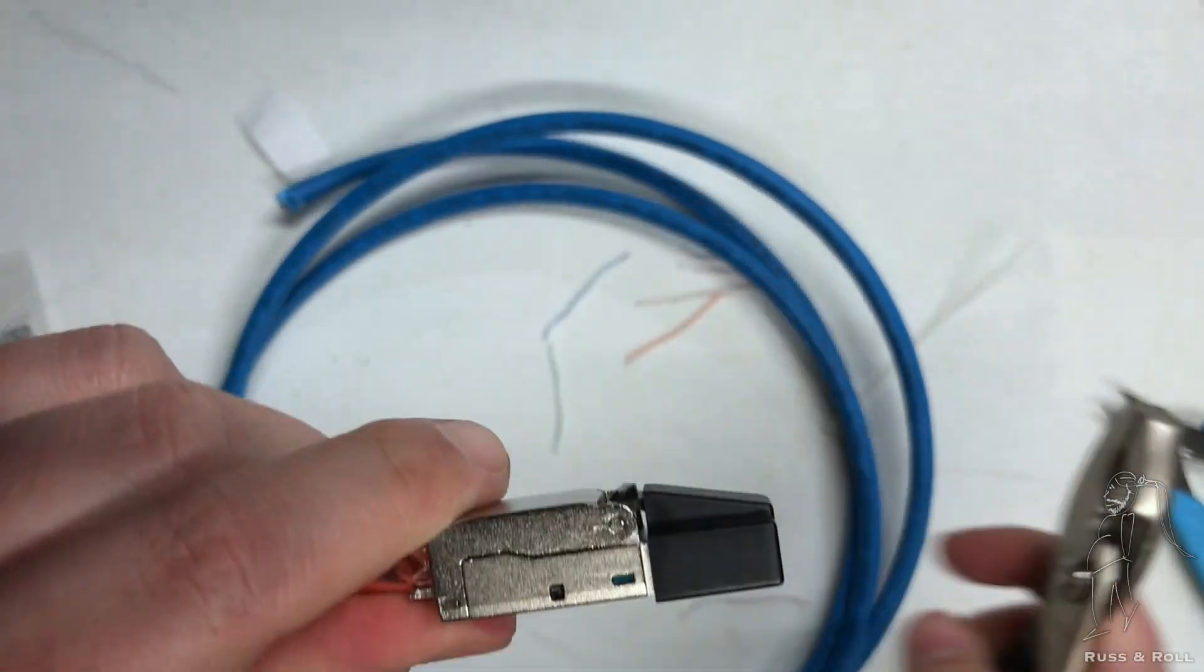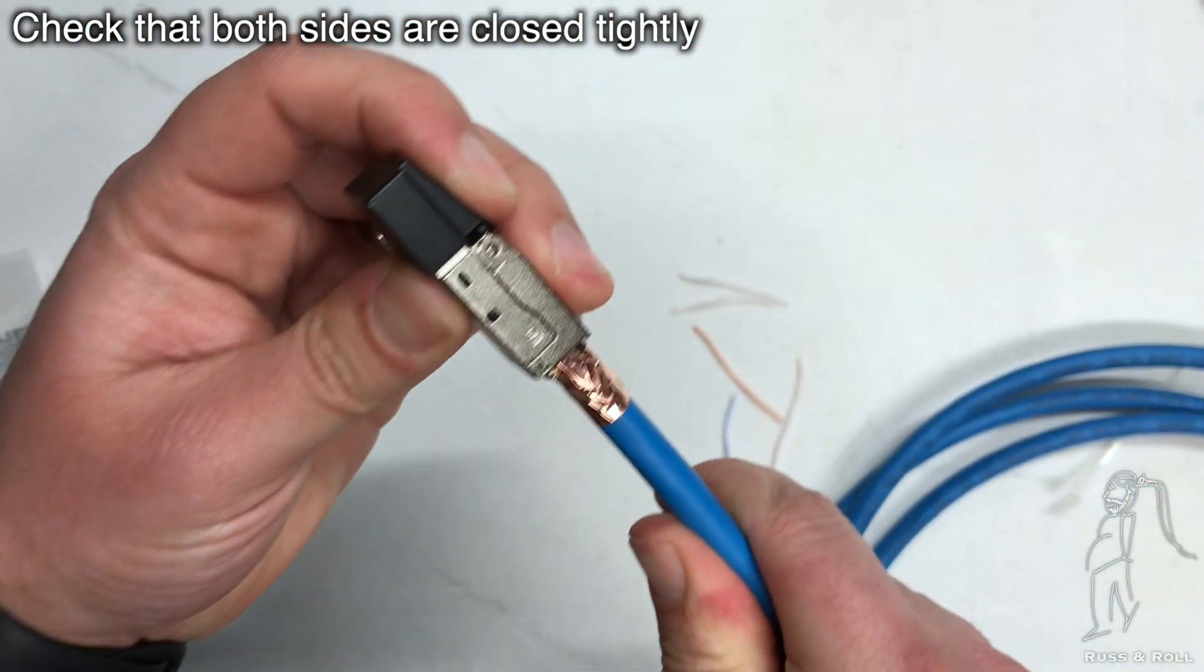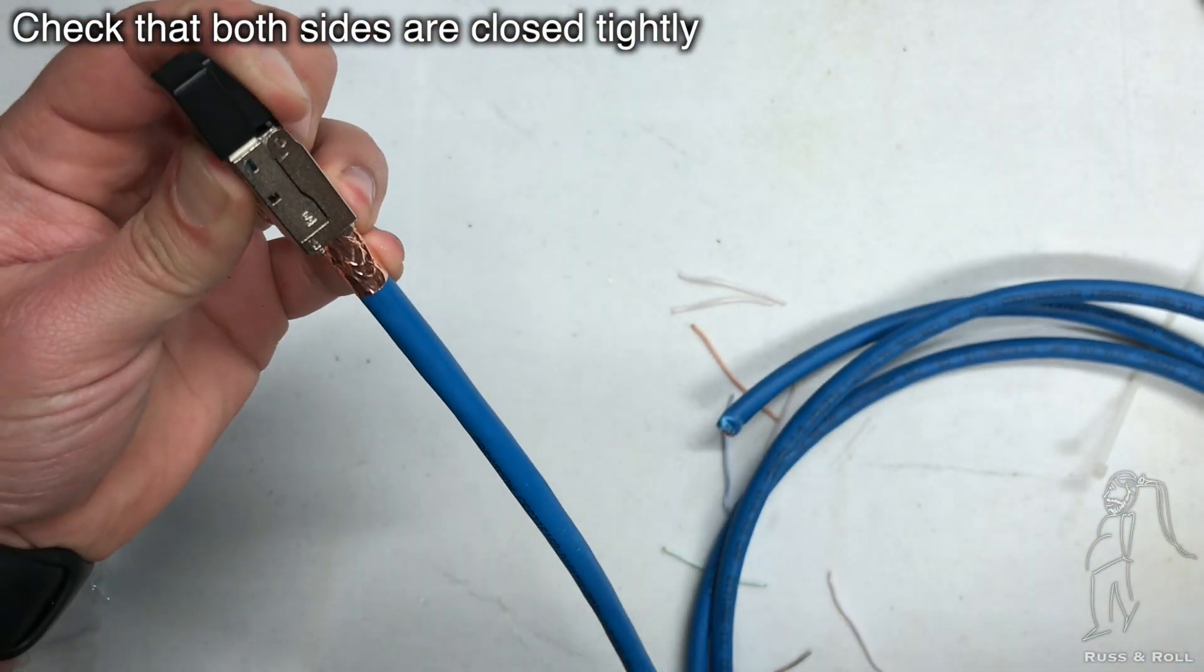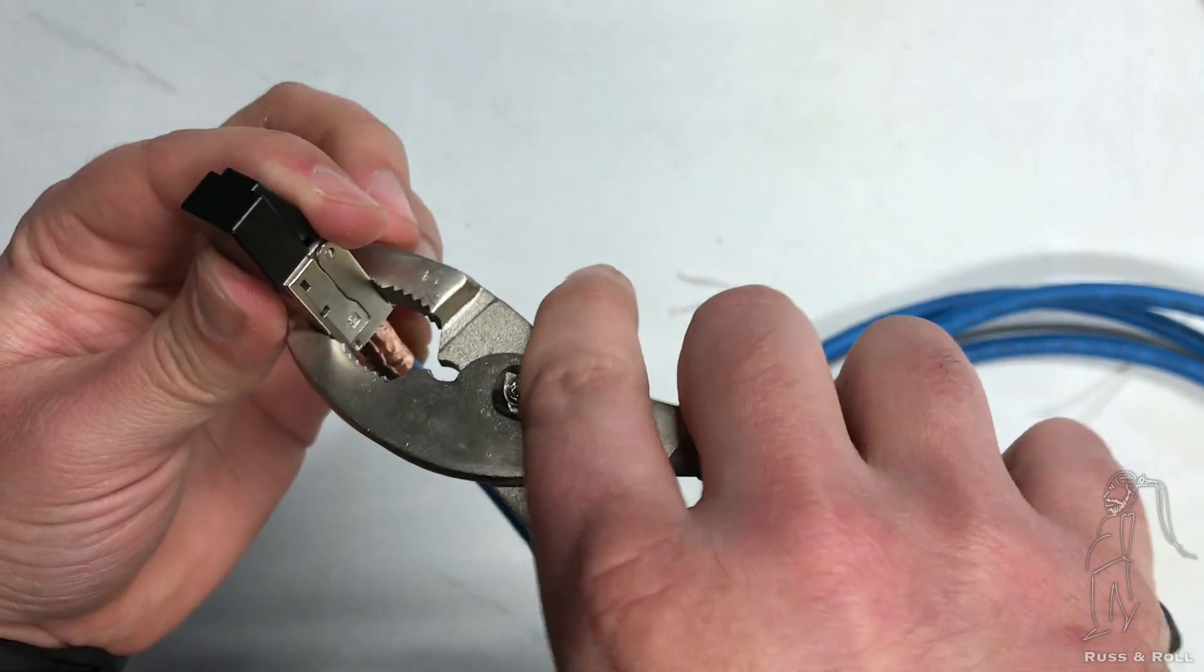So you want to squeeze it and make sure it's shut. Check it on both sides. Make sure you have a nice tight closure. If it's still open on either side, you can hit it again with the pliers just to make sure that it's punched down all the way and that it snaps shut.